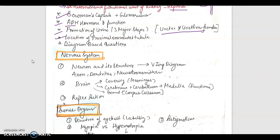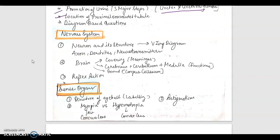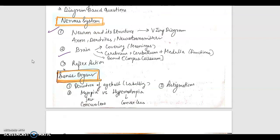Ureter and urethra function - it was previously asked in boards. Location of proximal convoluted tubule, and at last, the diagram based question from your exercise questions. Moving on to nervous system. Here the diagram of neuron, its structure, its labeling - everything should be covered in this part. Axon, dendrites, neurotransmitters, their functions.